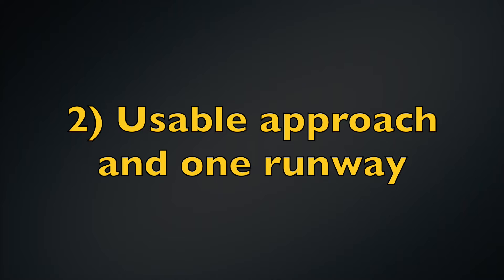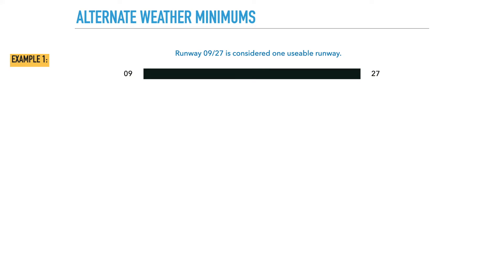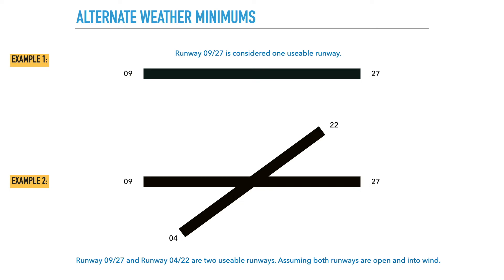Another thing to cover before we get into the alternate weather minimums is the concept of usable approaches. Runway 09/27 is considered one usable runway, meaning that if the runway is into wind and it's open because there's no NOTAM that's closed it, that's considered a usable runway — but it's only considered one, even though there are two ends to the runway. Another example is runway 09/27 plus runway 04/22. As long as both runways are open and they are into wind, they are considered two usable runways. This is a slight detail that's very important when determining your alternate weather minimums.